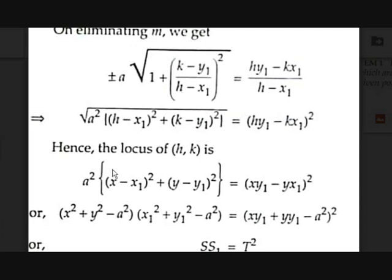We get the locus of (h, k) by replacing h with x and k with y. Simplifying this further gives: (x² + y² − a²)(x₁² + y₁² − a²) = (xx₁ + yy₁ − a²)², which can be written compactly as SS₁ = T².